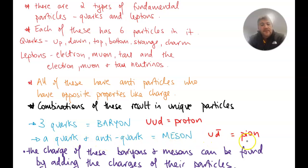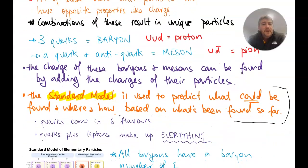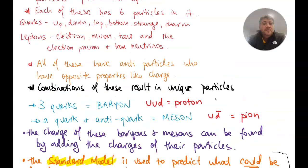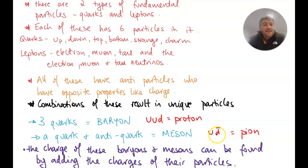So the up, top and strange quarks, they have a charge of plus two thirds. The down, bottom and charm quarks have a charge of minus one third. They're fractionally charged because that helps fit the standard model. The charges of these baryons and mesons can be found by adding the charges of the particles that make them up. So in this case here, an up and an anti-down. So a down quark is minus a third, so an anti-down is plus a third. So two thirds plus a third is one, so this pion must have a charge of plus one.